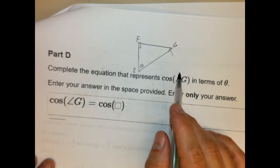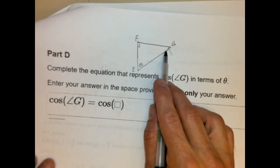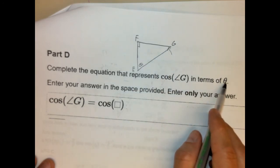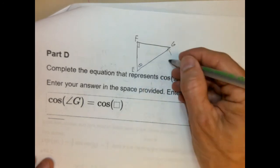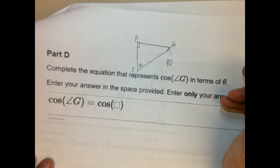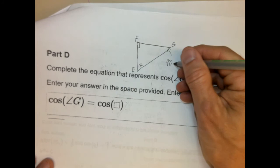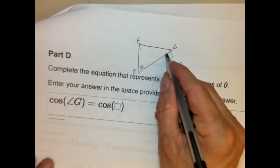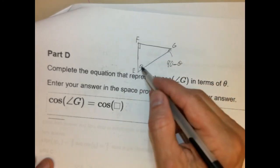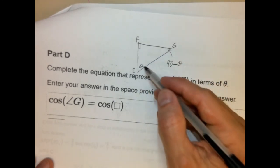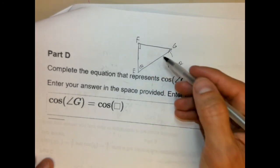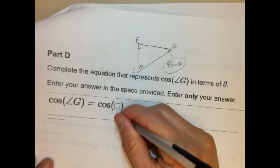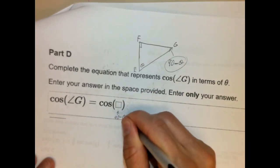So, cosine of G, right? We need to know what angle G is. But in terms of theta, right? So, it would literally just be 90, right? Minus theta. Because this and this have to add up to 90, right? So, we need to know what this is. Well, we only, we don't know what this is, but we know it's called theta. So, 90 minus theta would equal angle G, okay? So, it would simply be 90 minus theta, which would go right here. And that's it.